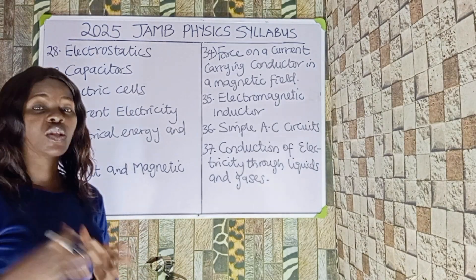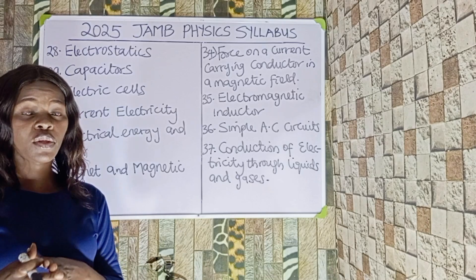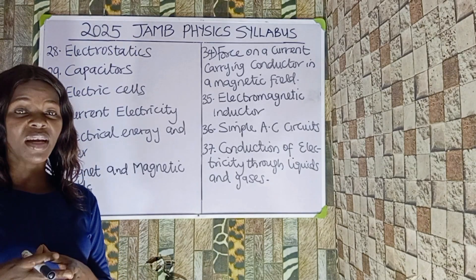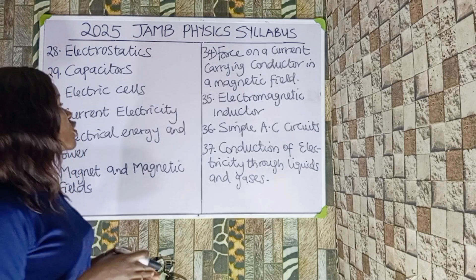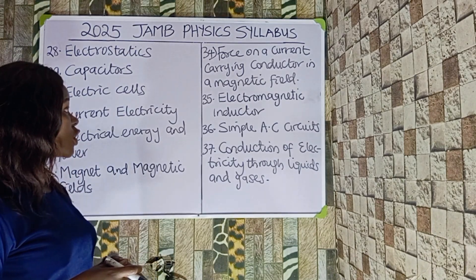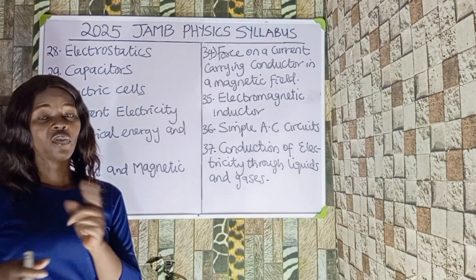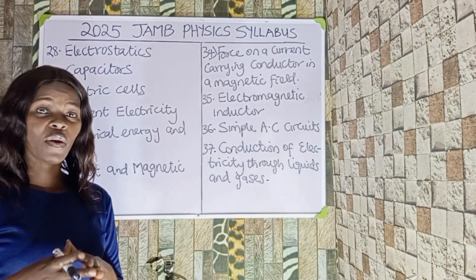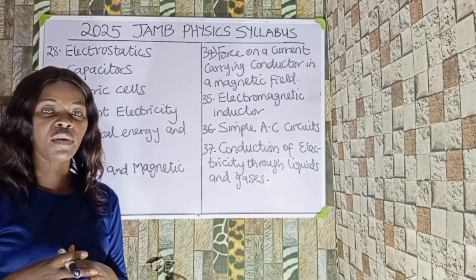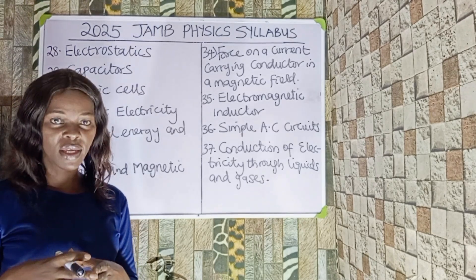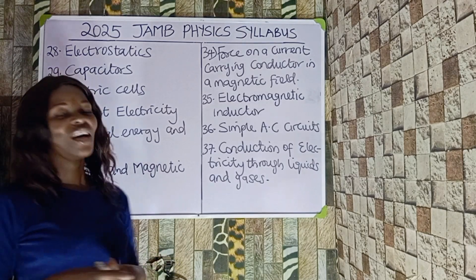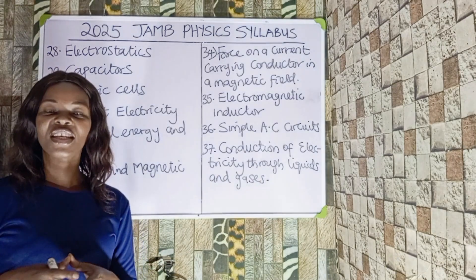Under magnets and magnetic fields we should look at the laws associated with magnetic fields, ferromagnetism, paramagnetism, and how to produce a magnet. Number thirty-three is the force on a current-carrying conductor in a magnetic field. We must know the formula and the questions associated with that.